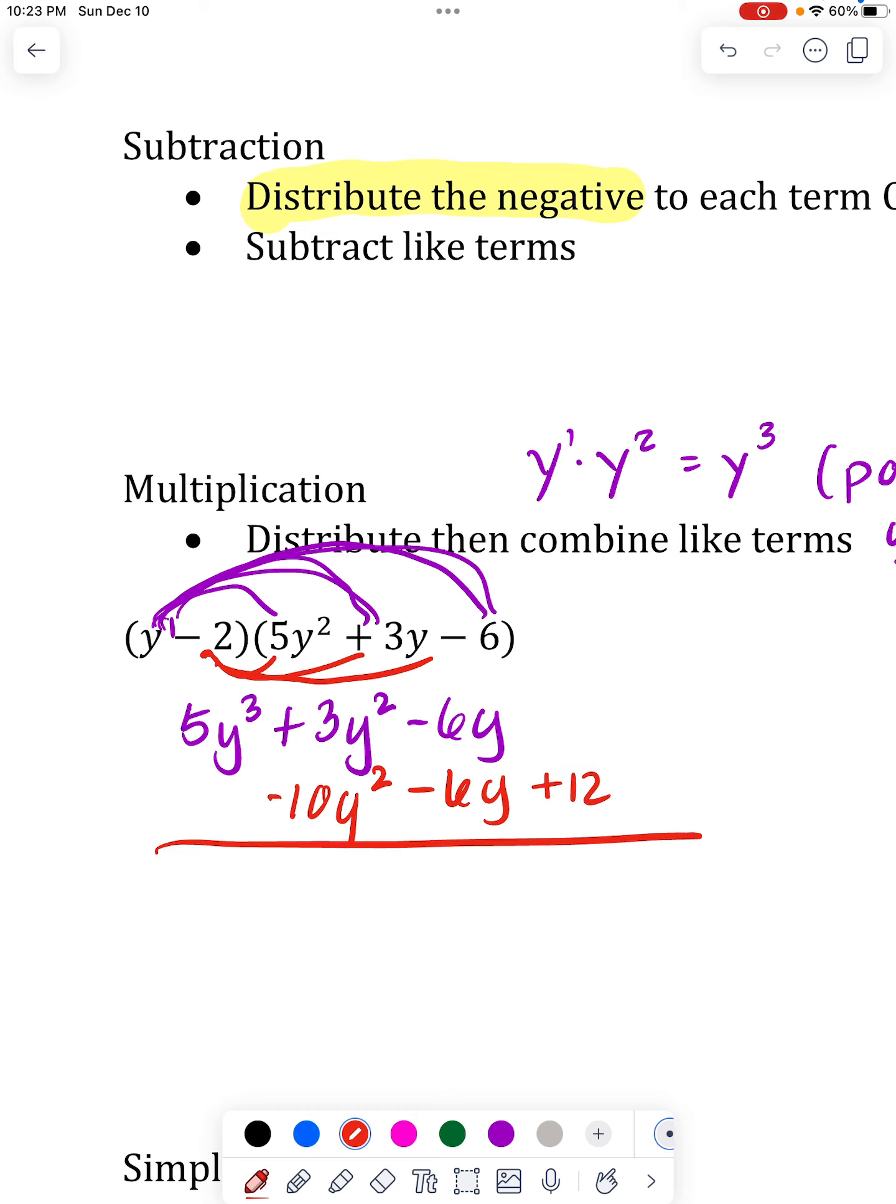You do not have to do that. You can just write it as one long string and then find the like terms. So here the 5y³ is the only y³ I have.